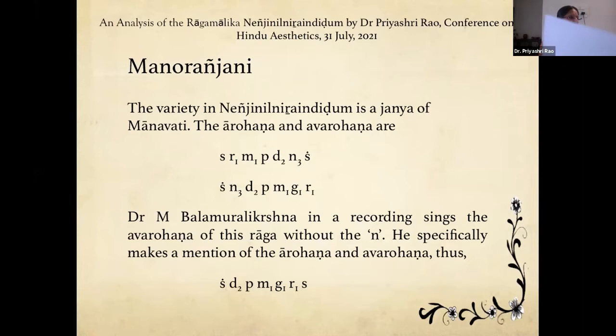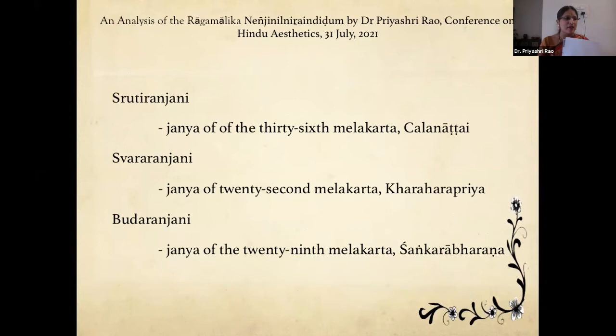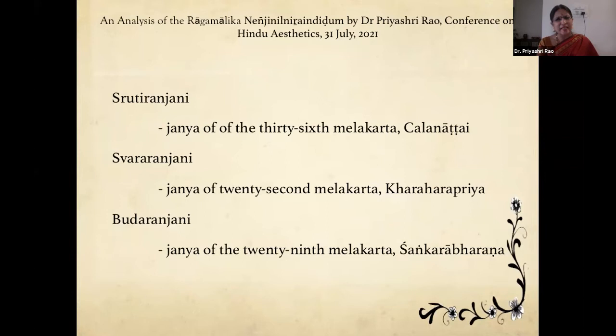The next three ragams are Shruti Ranjani, Swara Ranjani, and Budha Ranjani. Shruti Ranjani is the janya of the 36th melakarta Chalanata; Swara Ranjani is the janya of the 22nd melakarta Karaharapriya; and Budha Ranjani is the janya of the 29th melakarta Shankarabharanam. These three ragams are not mentioned in great detail in any of the lakshanagranthas — only Sangeet Swara Prastara Sagaram of Nadamuni Panditar, written in 1904, gives their arohanam and avarohanam. T.M.T. sir, with his approach, has managed to bring out the raga swarupam, a testimony to his greatness as a composer.